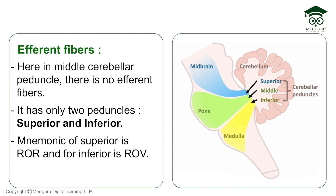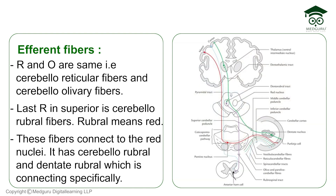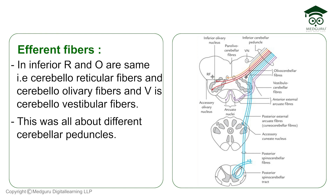For efferent fibers, the mnemonic is: superior peduncle is R-O-R and inferior peduncle is R-O-V. R and O are common to both — cerebellorecticular fibers and cerebelloo-olivary fibers. The superior peduncle has an extra R for cerebellorubal fibers, meaning fibers connecting the cerebellum to the red nucleus — specifically the dentatorubral fibers connecting the dentate nucleus to the red nucleus. For the inferior peduncle, V stands for cerebellovesibular fibers.